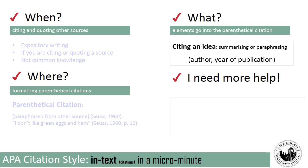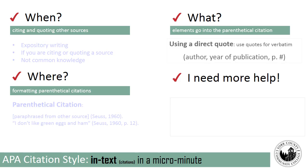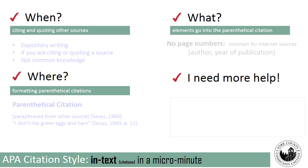If you're citing an idea — meaning you're summarizing or paraphrasing — the only elements you need are the author, comma, and year of publication. If you're using a direct quote, this is when you need to include a page number. So in your in-text citation you'd use the author, year of publication, comma, and p. with the page number where you found the direct quote. In some cases you do not have a page number, and in that case you simply use the author, comma, and year of publication.